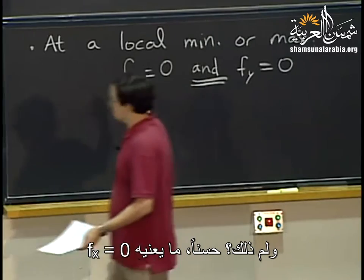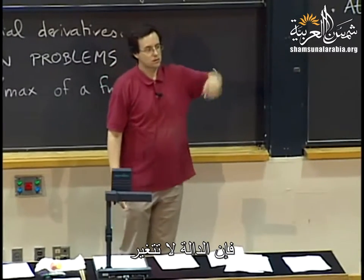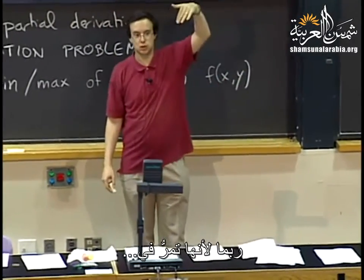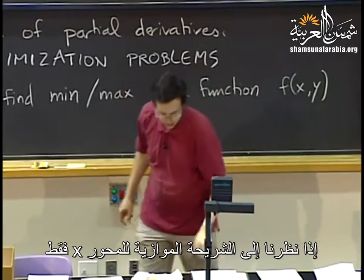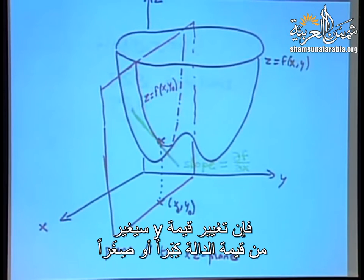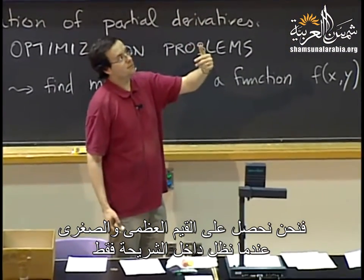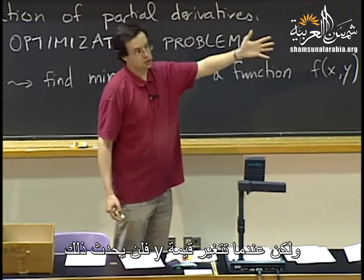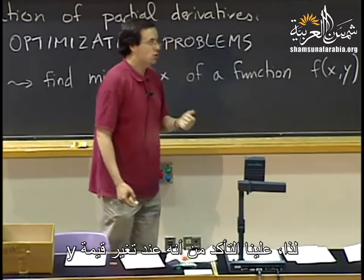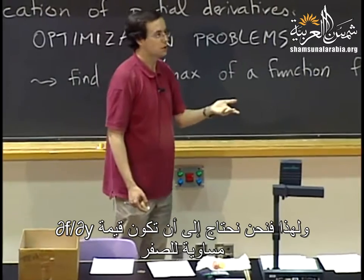For a function of two variables, if we have a local minimum or a local maximum, then both partial derivatives — partial f partial x and partial f partial y — are both zero at the same time. If f sub x is zero, when I vary x, to first order the function doesn't change. But if partial f partial y is not zero, then by changing y I could still make the value larger or smaller, so that wouldn't be an actual maximum or minimum.